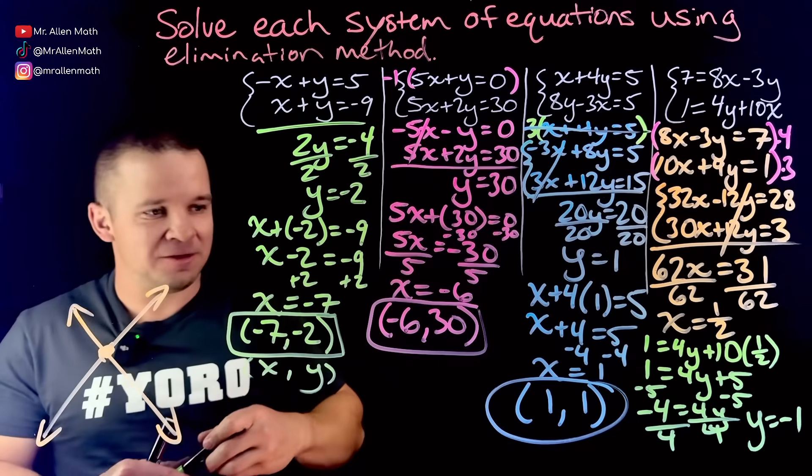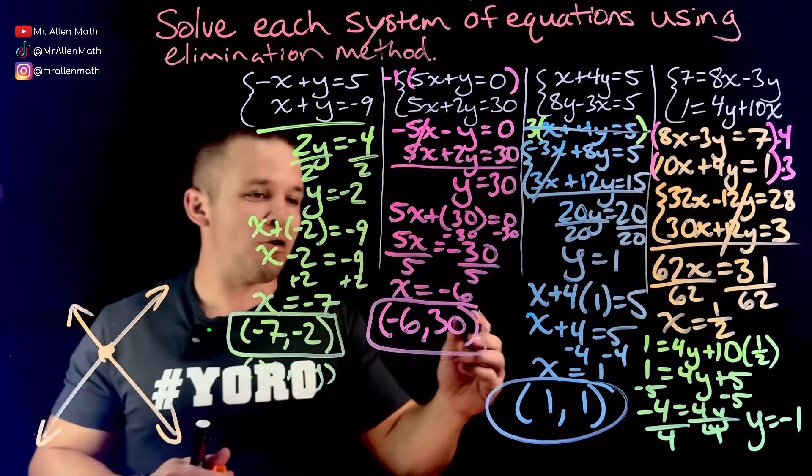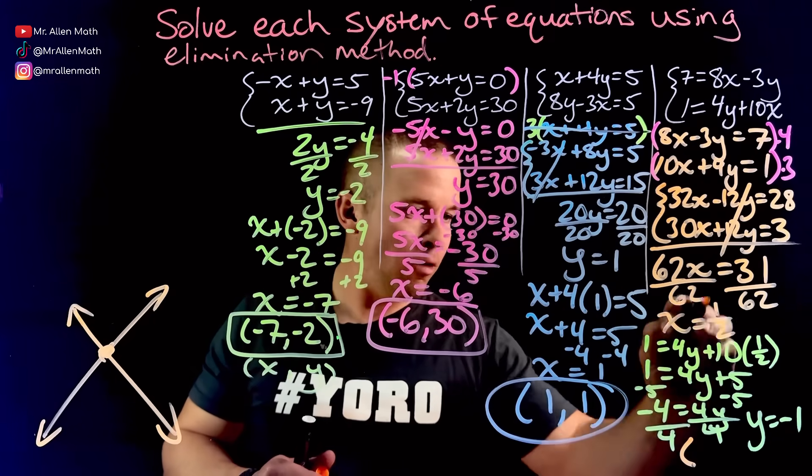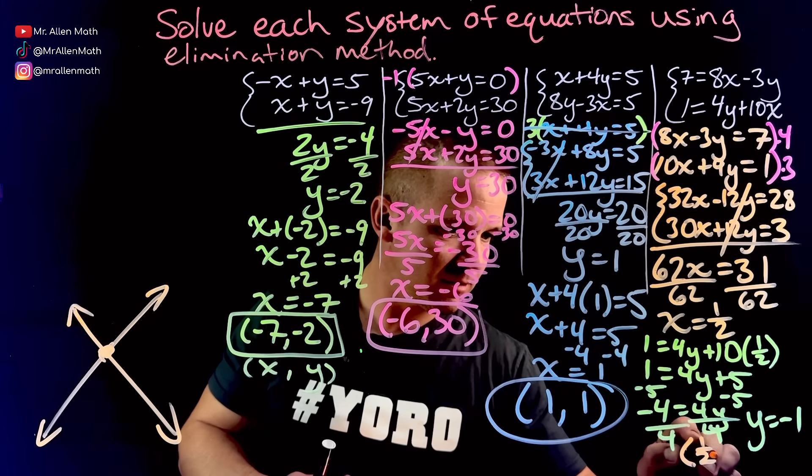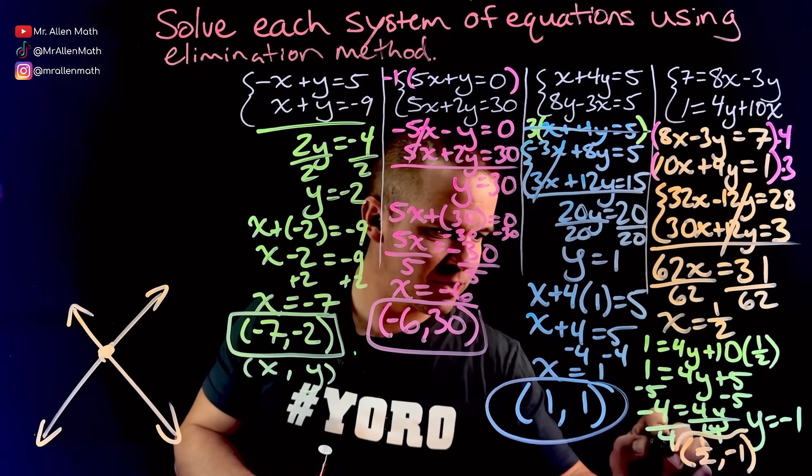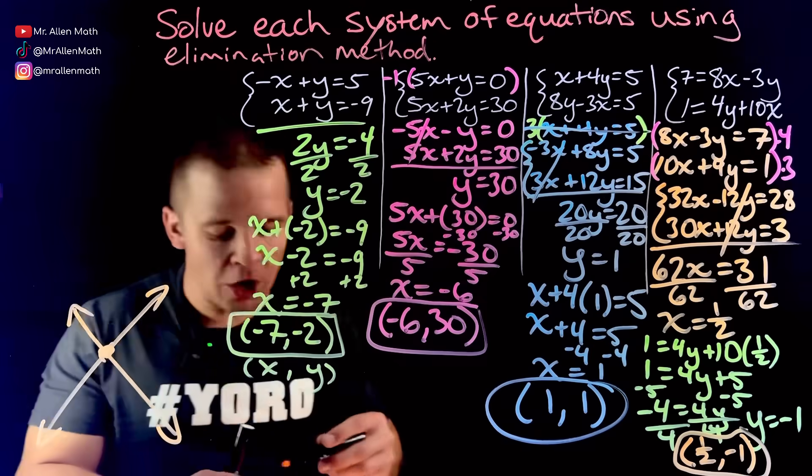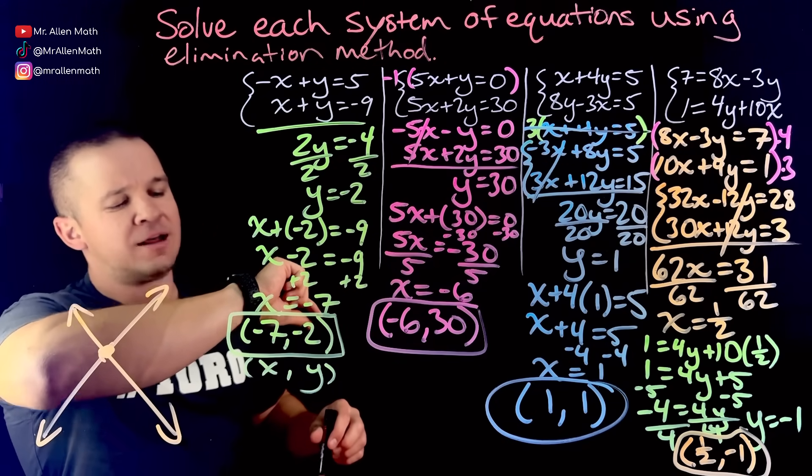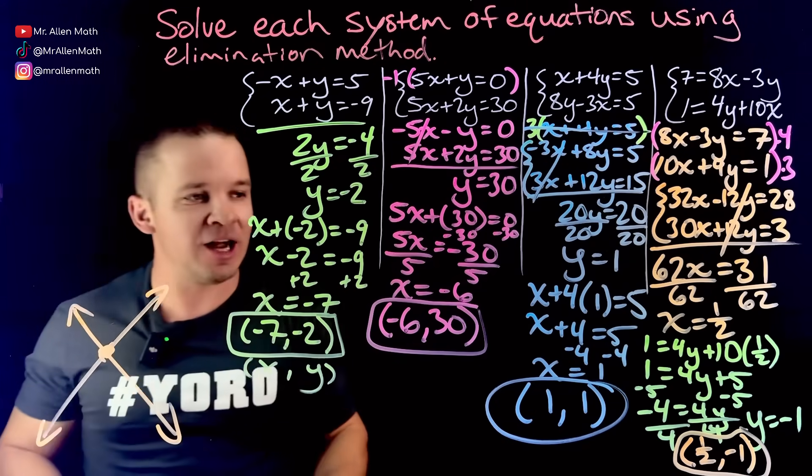And lastly, but not leastly, we got our ordered pair, which hopefully we'll be able to see here. We've got one half for x and we got negative one for y. Sorry, we got a little scrunch there at the end. So much math trying to be fit on this board here. Let's see if we got it. I think we got it. We nailed it. There we go, guys.